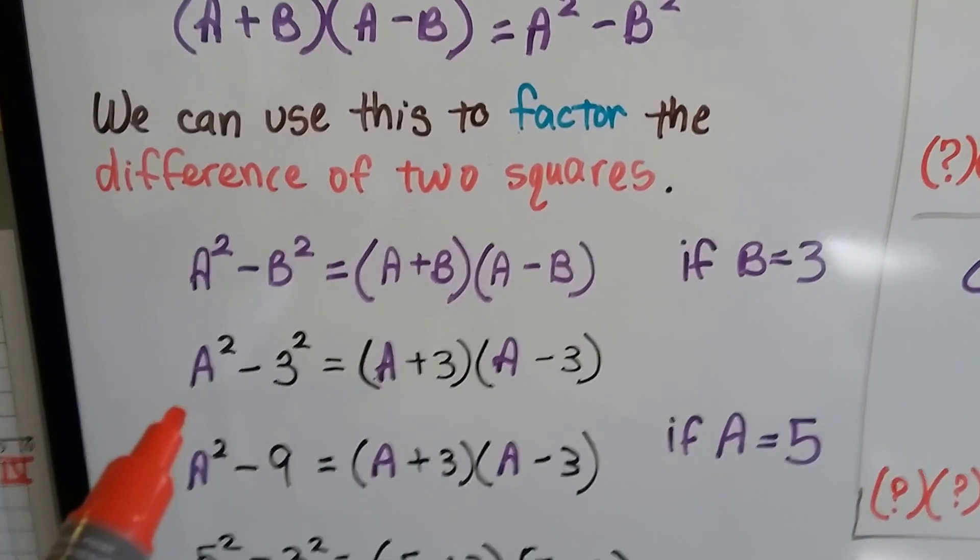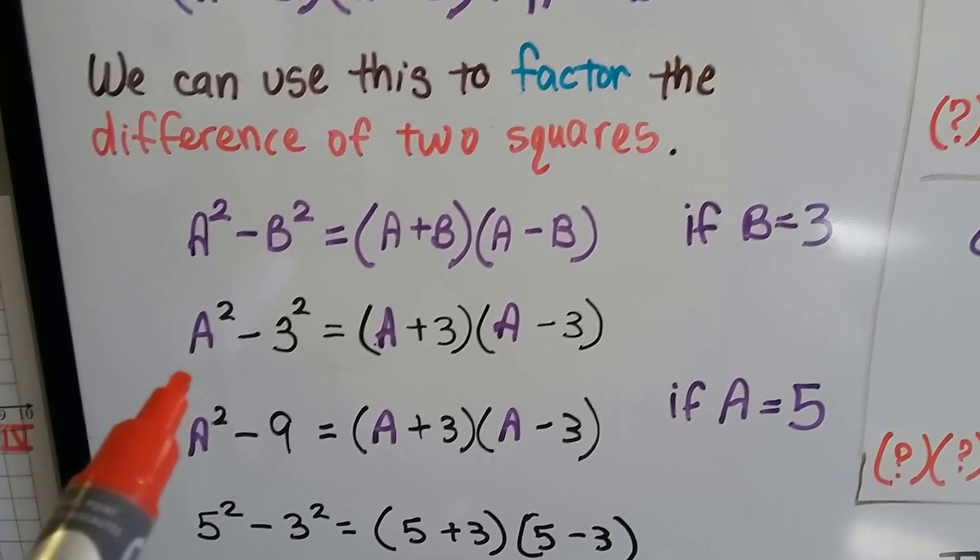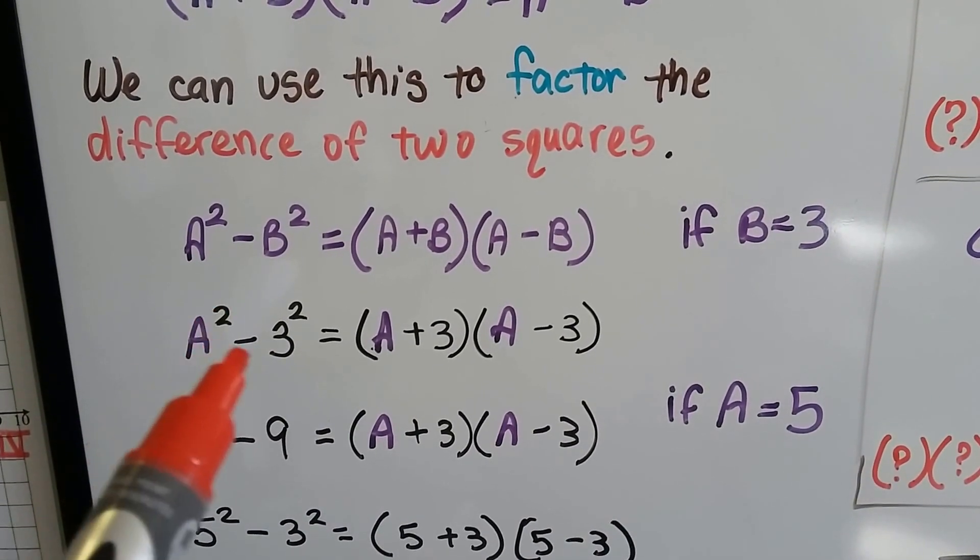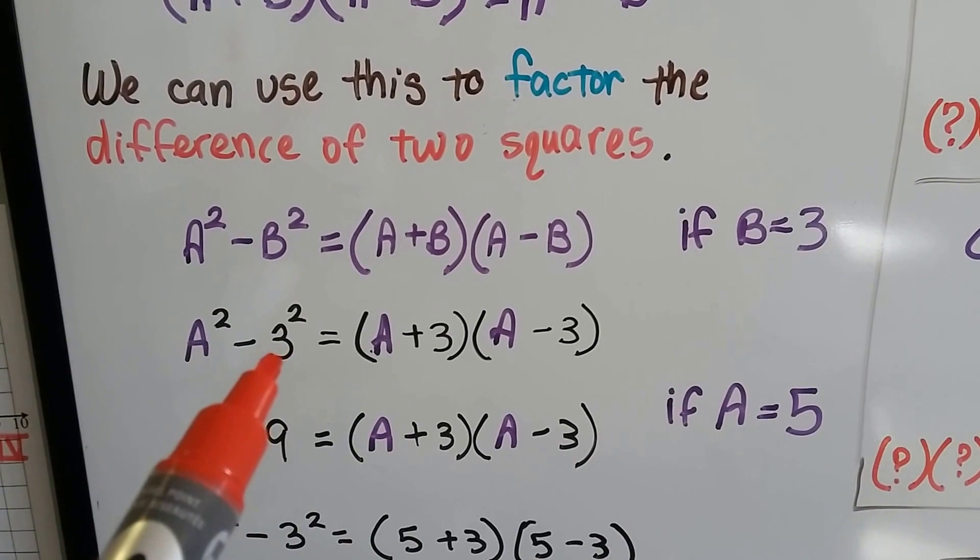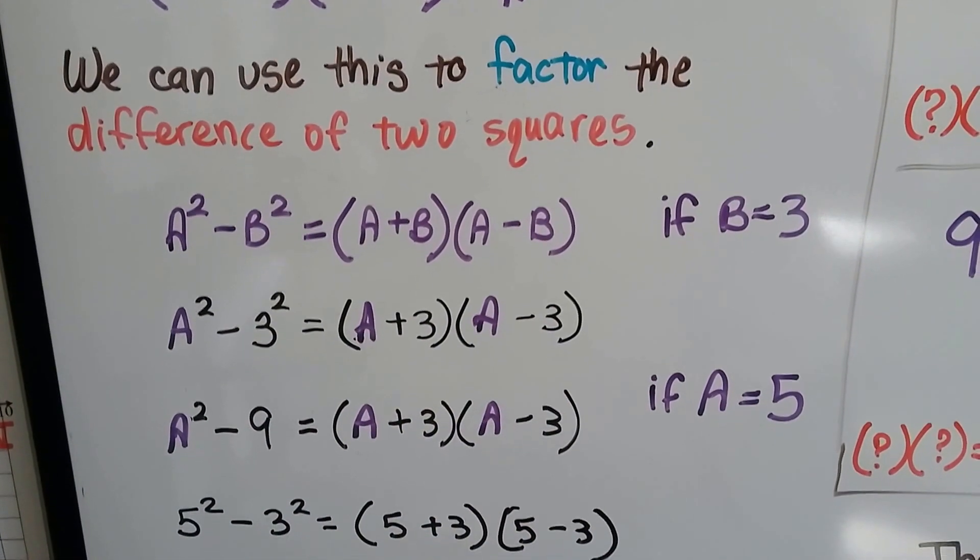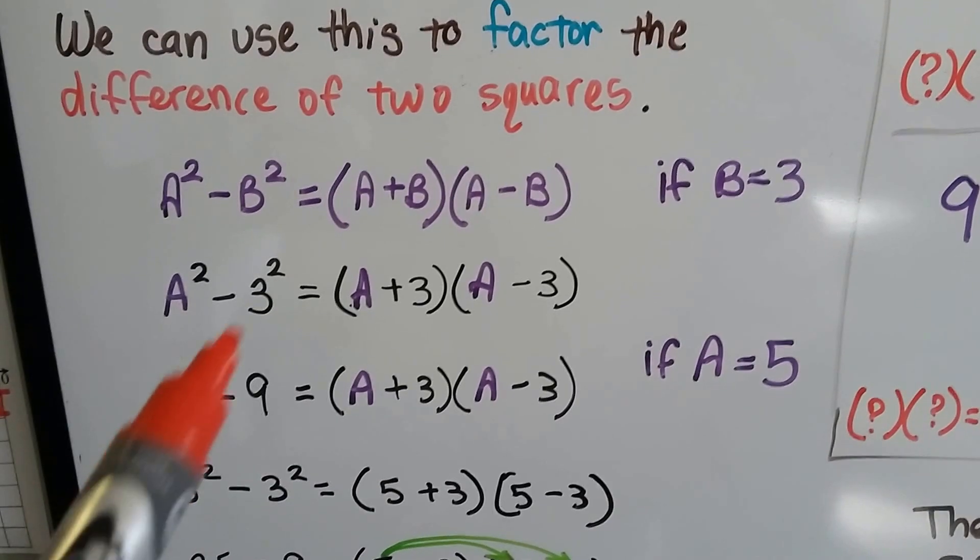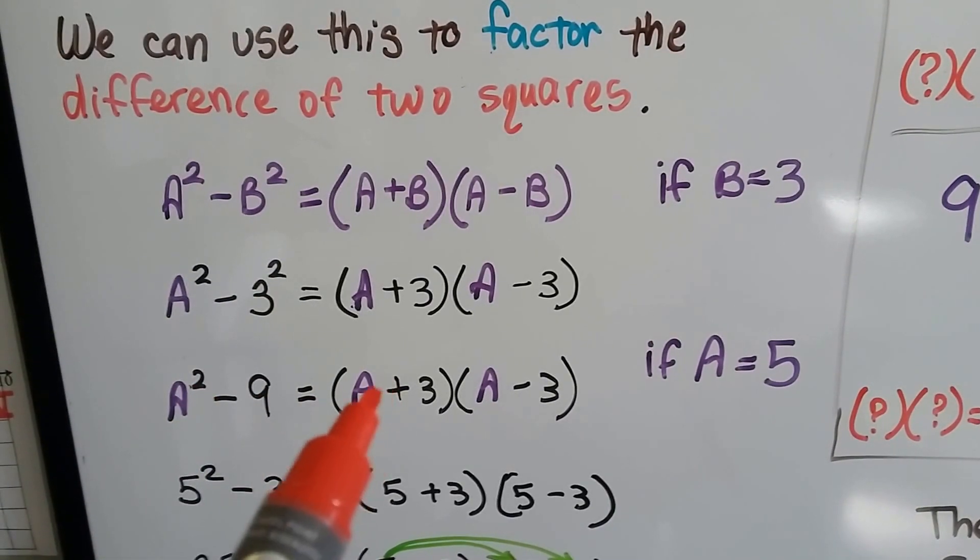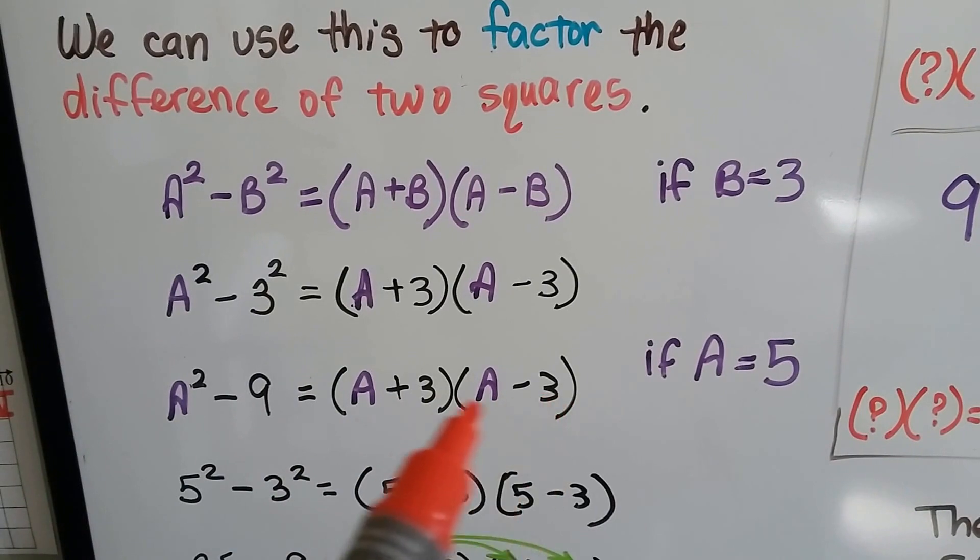What if the b was a 3? If we started plugging in some real numbers, then we would have a² minus 3². We could write it as (a+3)(a-3). We could also write it as a² minus 9 and still have (a+3)(a-3).